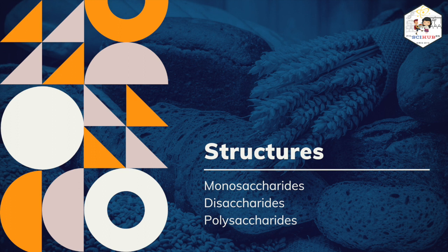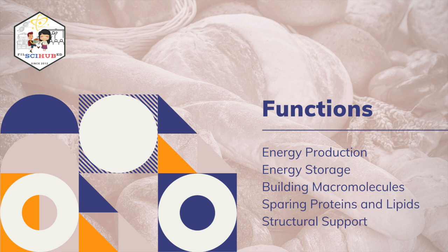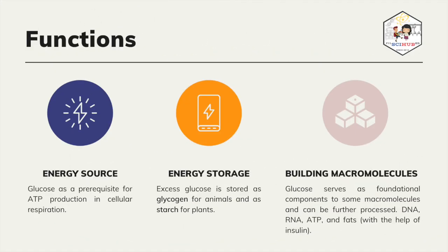Now that we have discussed the different classifications of carbohydrates based on their structures and briefly discussed the common carbohydrates we encounter, let us go through the general functions of carbohydrates. We have already touched on some of these, so let us use this as a review and recall. Energy source: carbohydrates serve as an energy source. For example, glucose is a prerequisite for ATP production in cellular respiration. Other types of carbohydrates can be broken down by organisms into simpler monosaccharide forms, such as glucose, for further energy consumption.